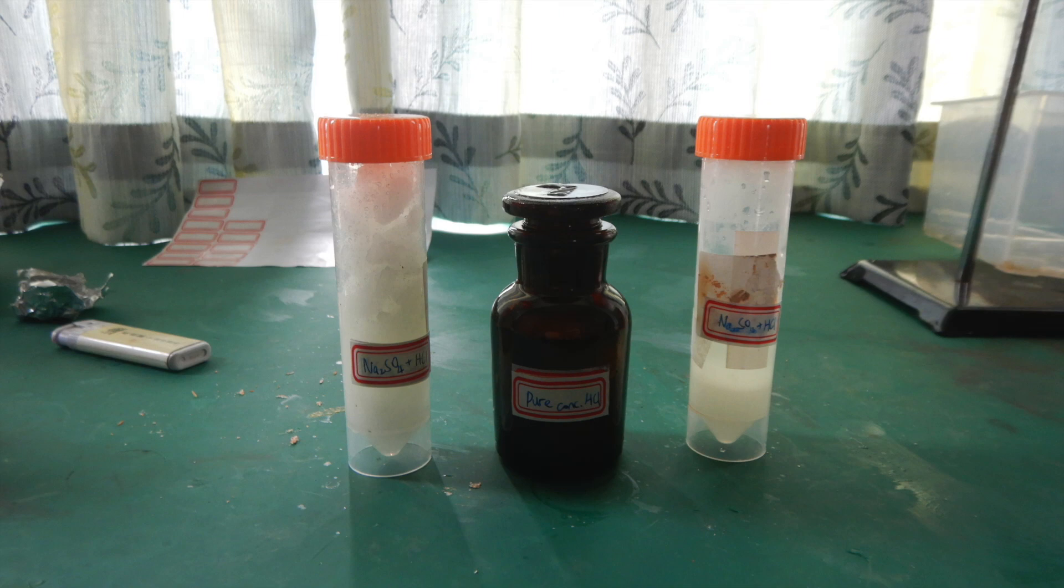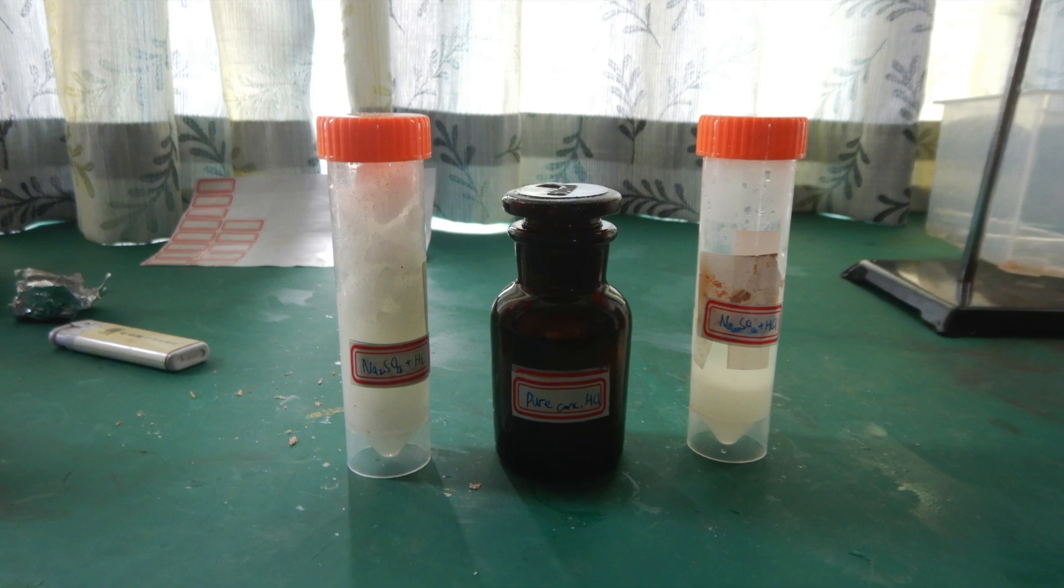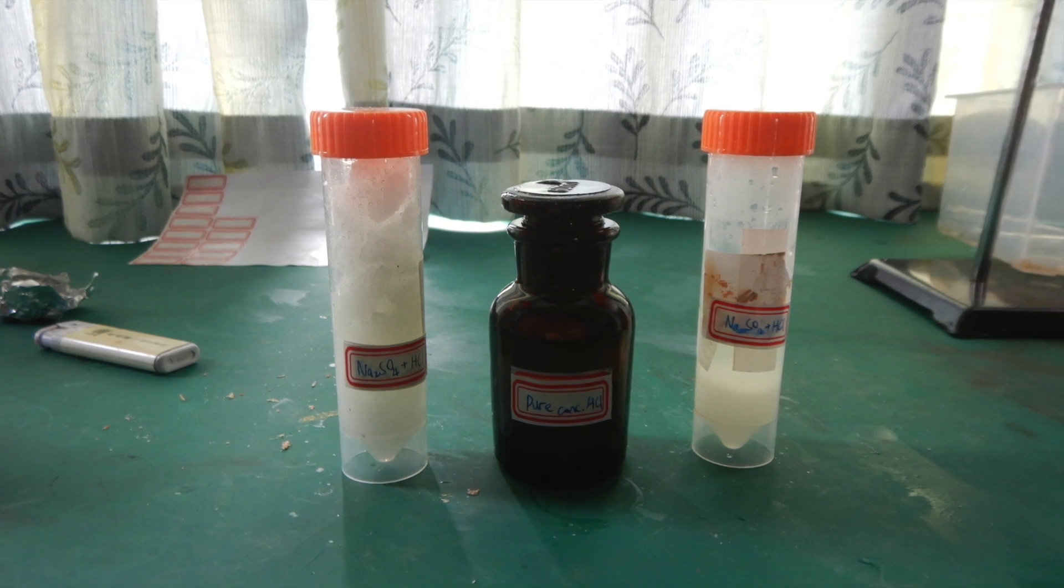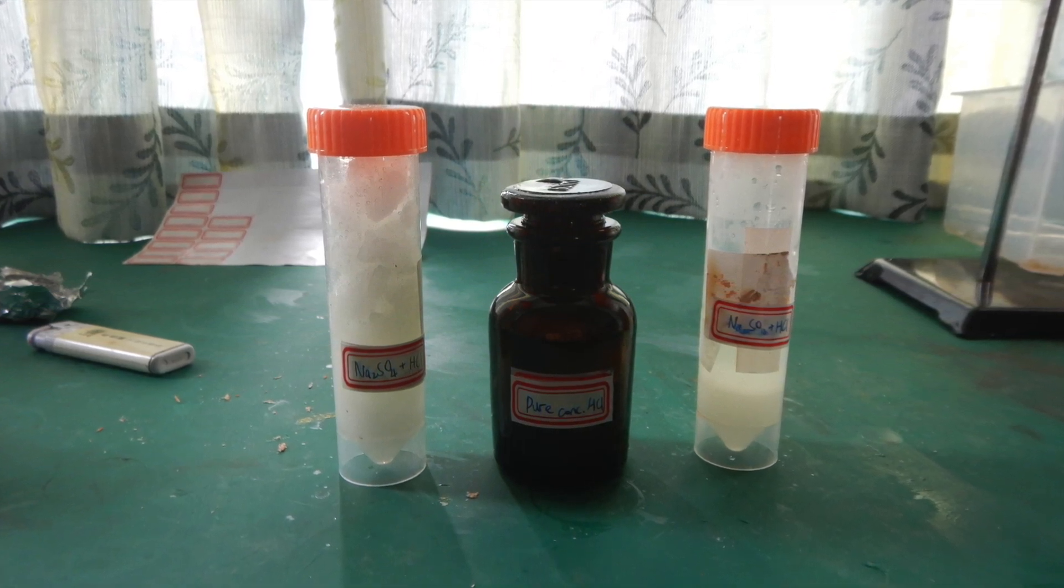So here is what we got. 66.5 grams of pure, azeotropic hydrochloric acid in the reagent bottle, and 2 bottles of residue from the conical flask.